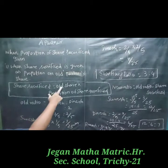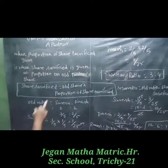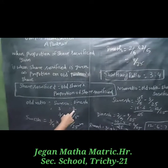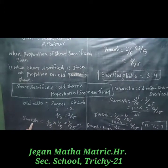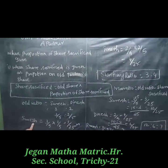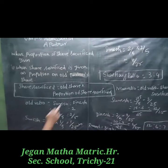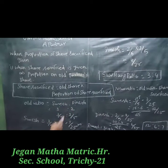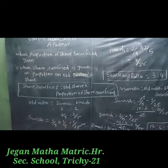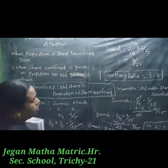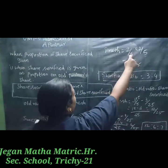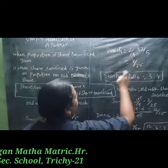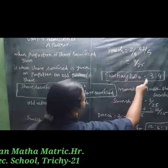Reviewing sum 12 again: share sacrifice formula is old share multiplied by proportion of share sacrifice. Partners Suresh and Dinesh have old ratio 3 to 2, giving old shares 3/5 and 2/5. Suresh's share sacrifice: 3/5 × 1/5 = 3/25. Dinesh's share sacrifice: 2/5 × 2/5 = 4/25. Therefore sacrificing ratio is 3 to 4.